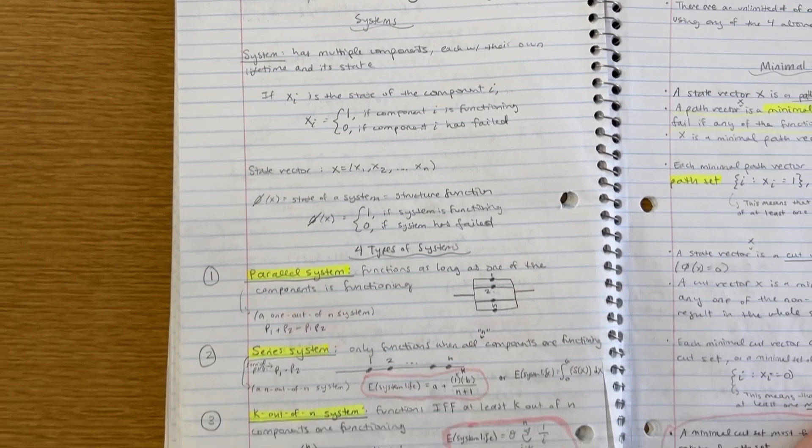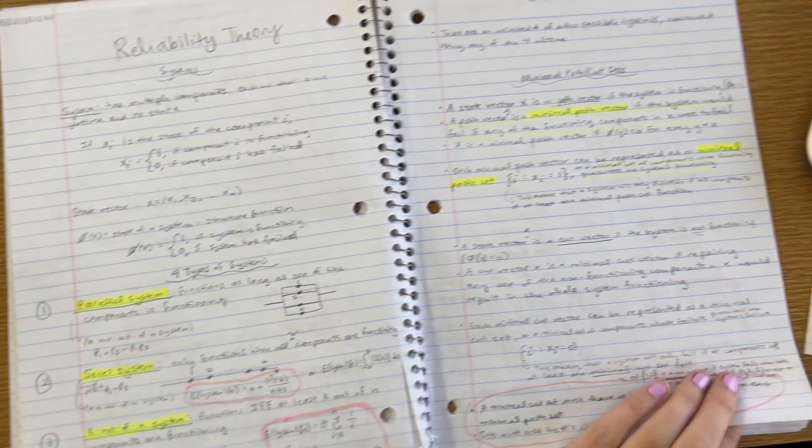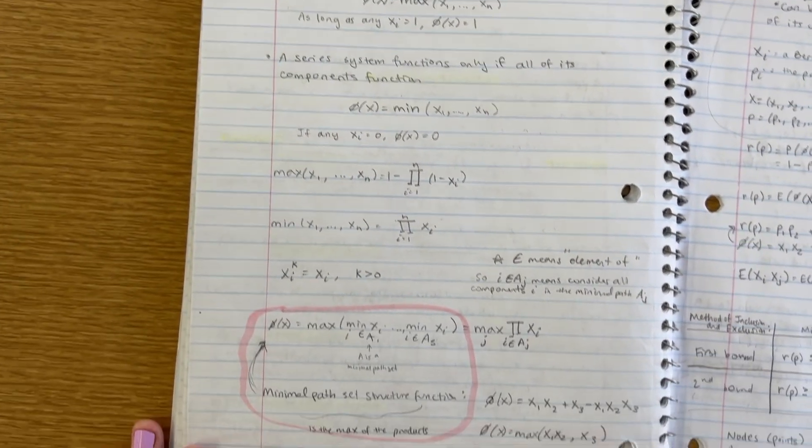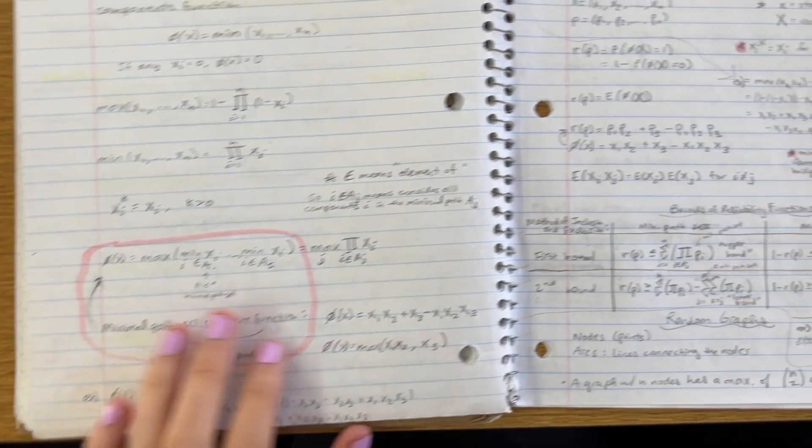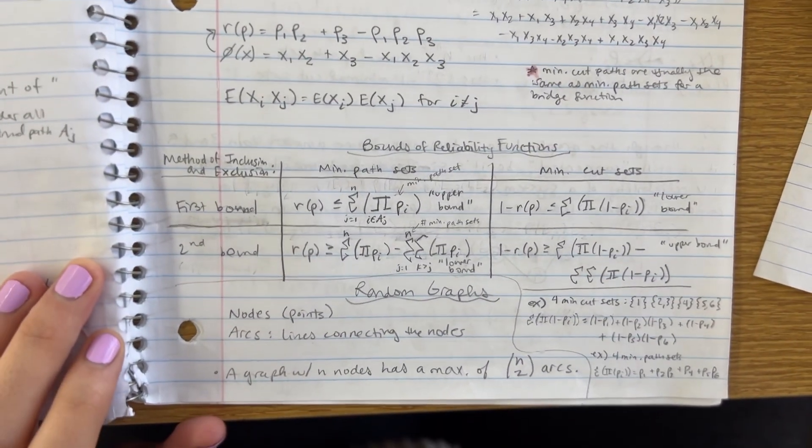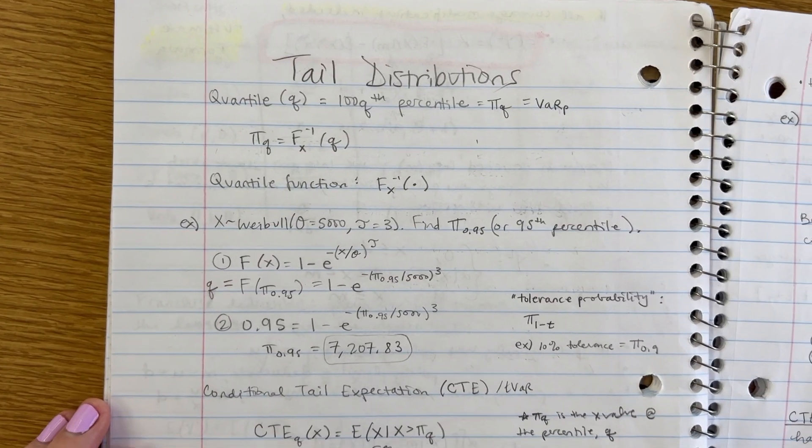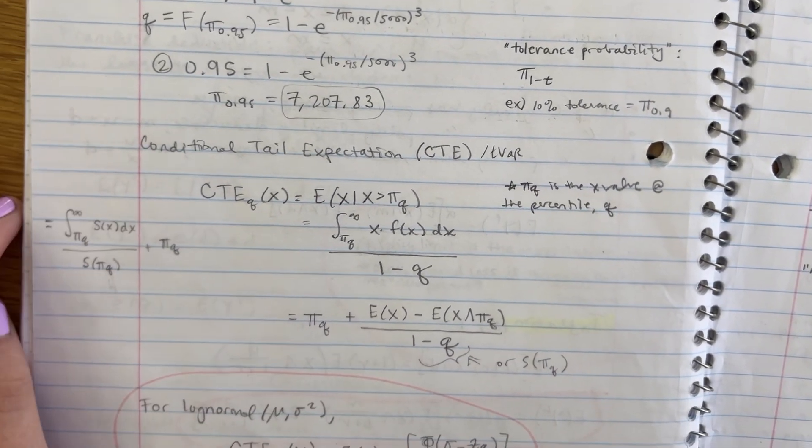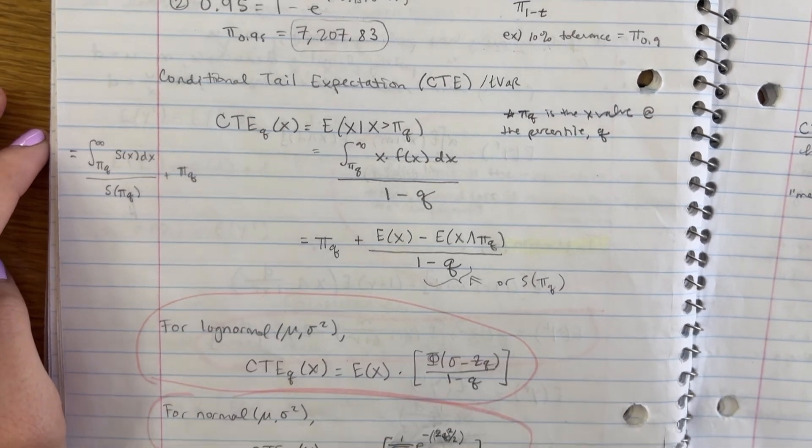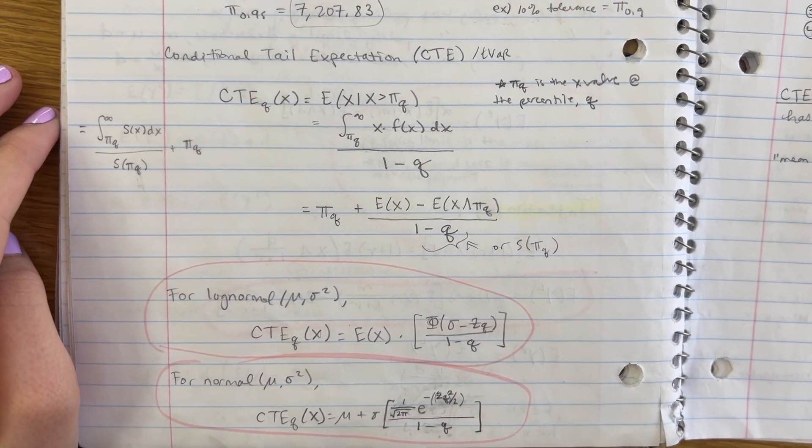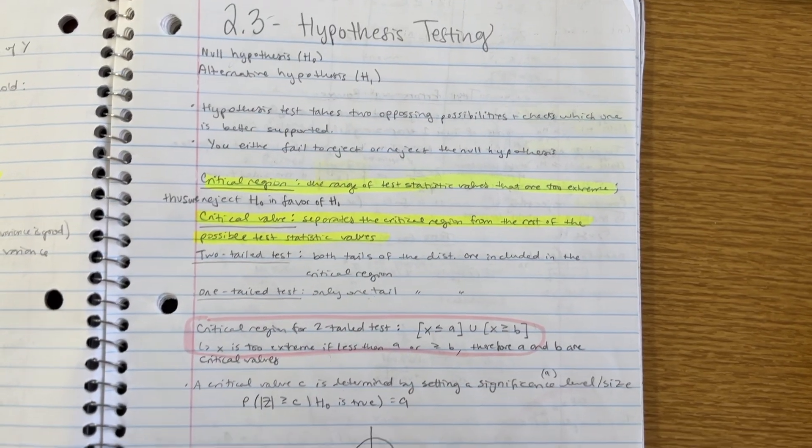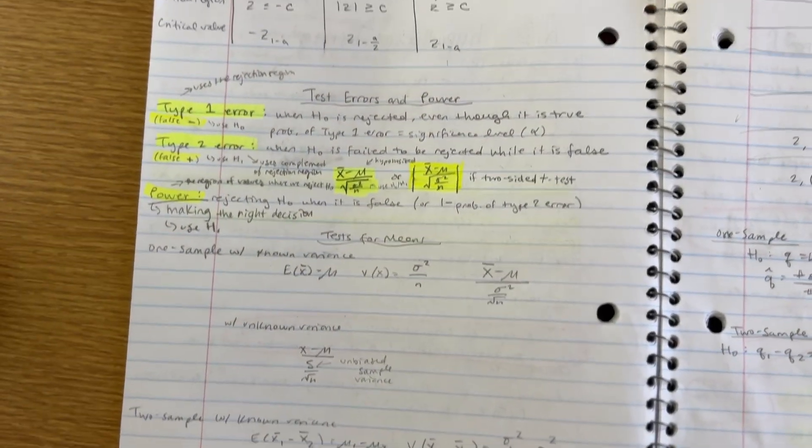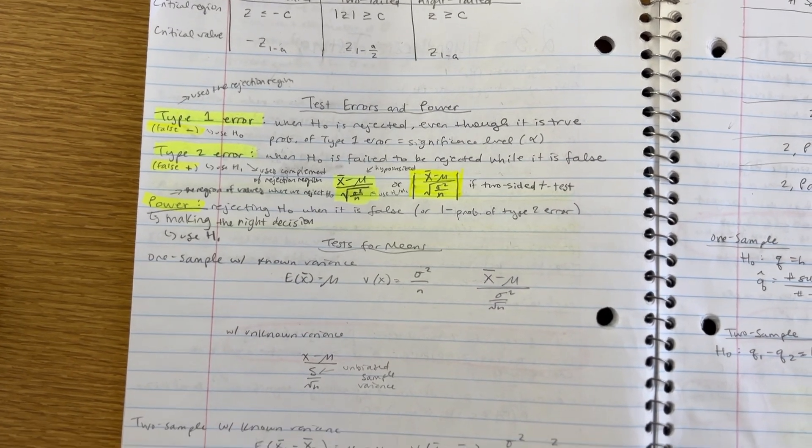I also did a quiz on reliability theory, specifically focusing on the calculations for the lower and upper bounds, which you can see here for minimal path and cut sets. I also needed to do some practice problems for conditional tail expectation, aka CTE. And lastly, I did a practice quiz on this section, hypothesis testing, to get better at calculating type 1 and type 2 errors.